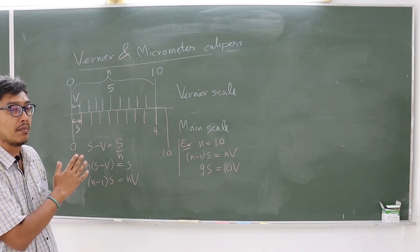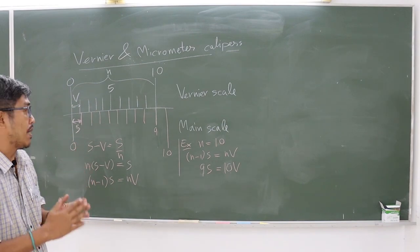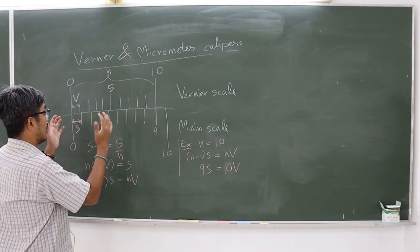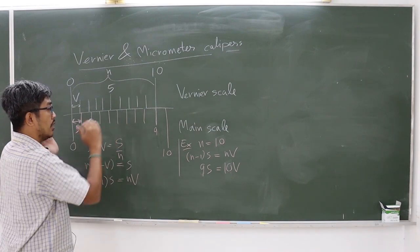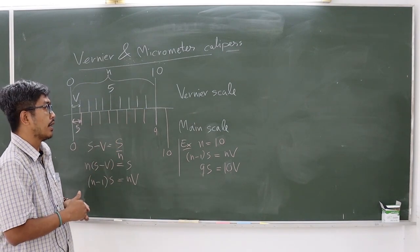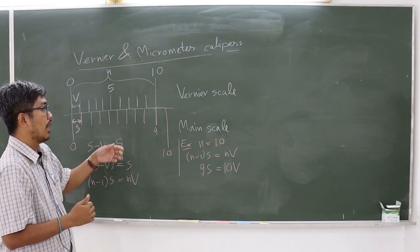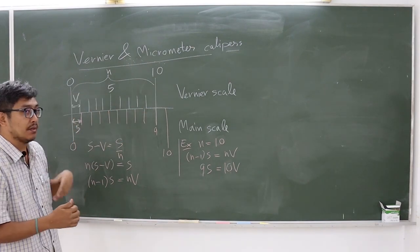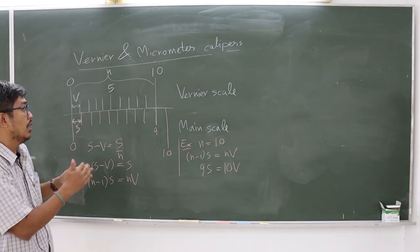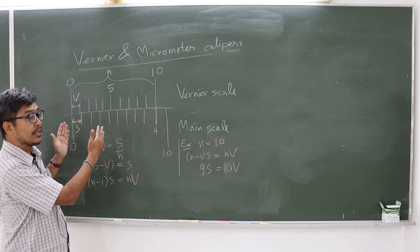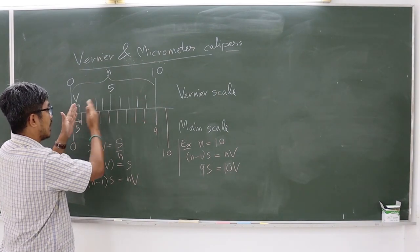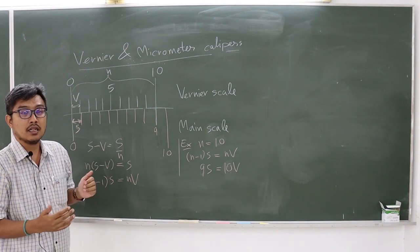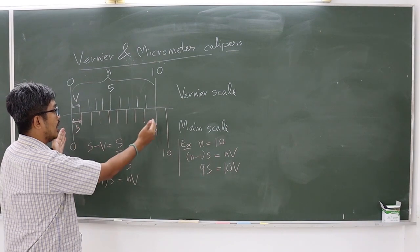The vernier scale is extensively used in physics, which is the addition of the normal scale. The top lines are the vernier scale and the bottom lines are the main scale. As we can observe, the length of the vernier scale is a bit shorter than the length of the main scale.